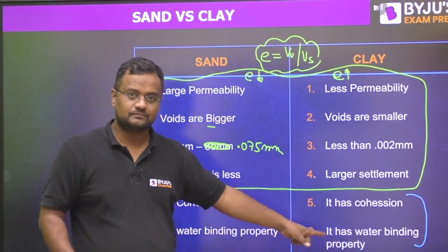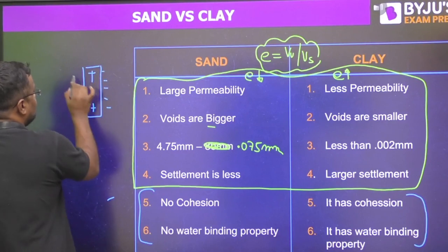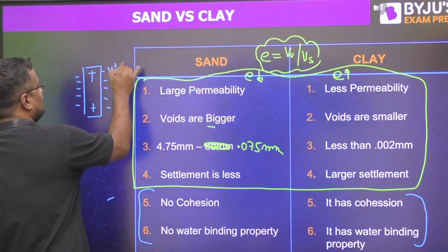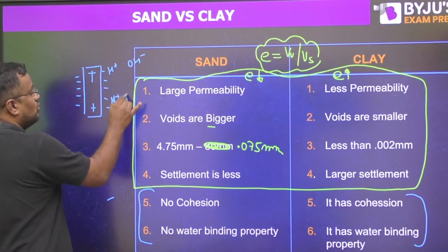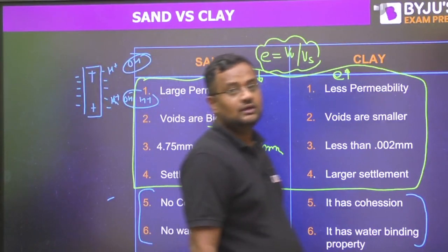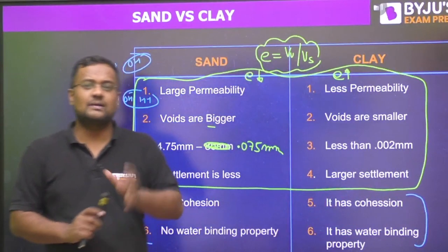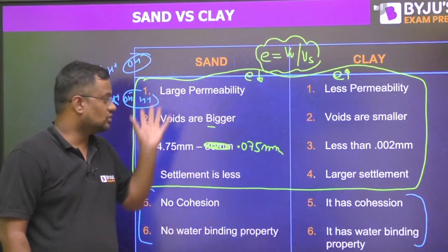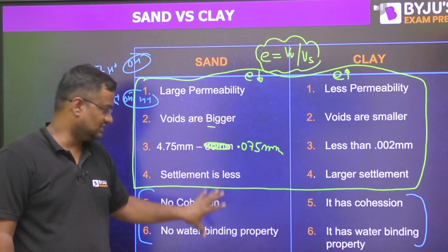Clay has a flaky shape structure. Water is a dipole — H⁺ and OH⁻ — so the H⁺ can be attracted to the negative surface of clay. Some cations like potassium or calcium may also be present, and the OH⁻ side of water attacks the clay surface. Due to hydrogen bonding and other forces, water is strongly attached to clay. So when you compress clay, water comes out, but not as easily as in sand.